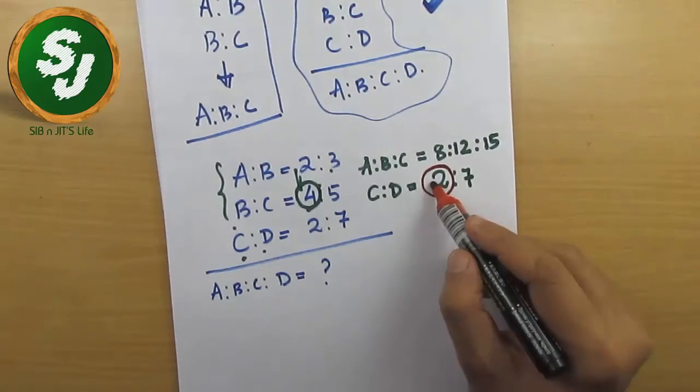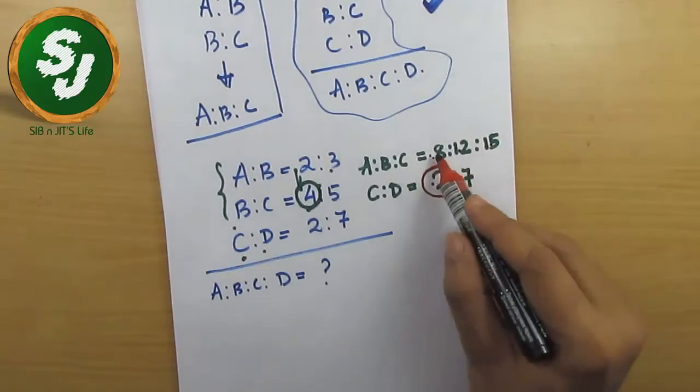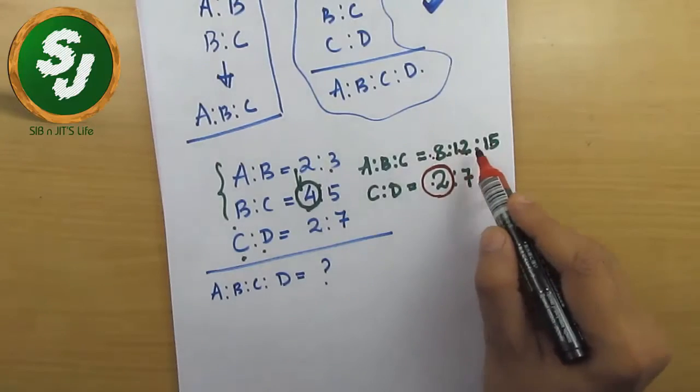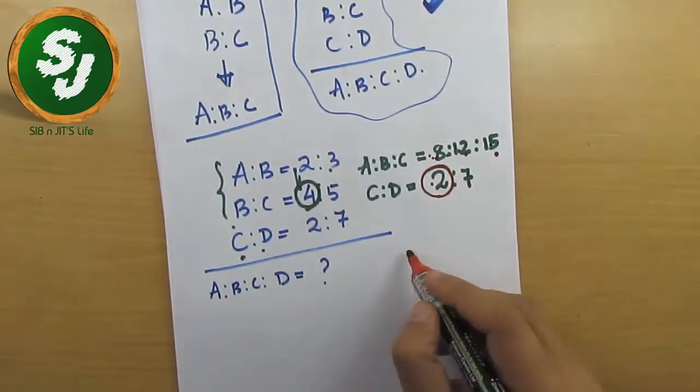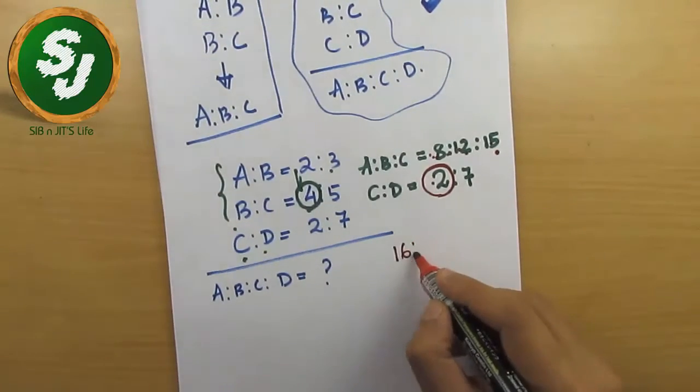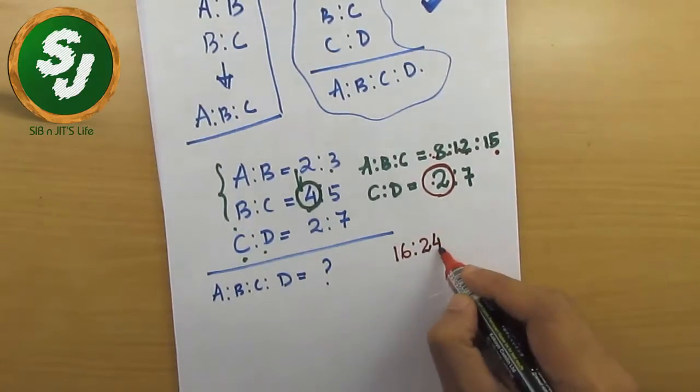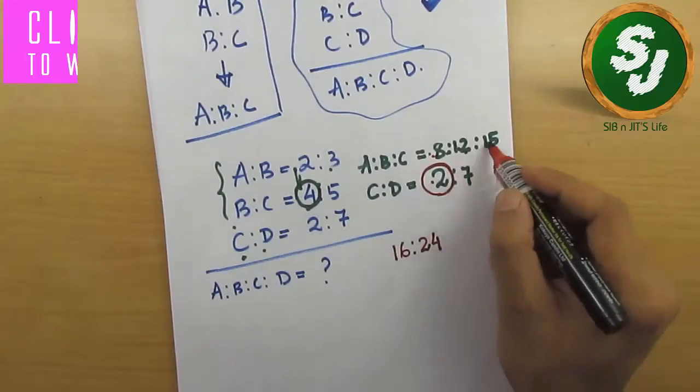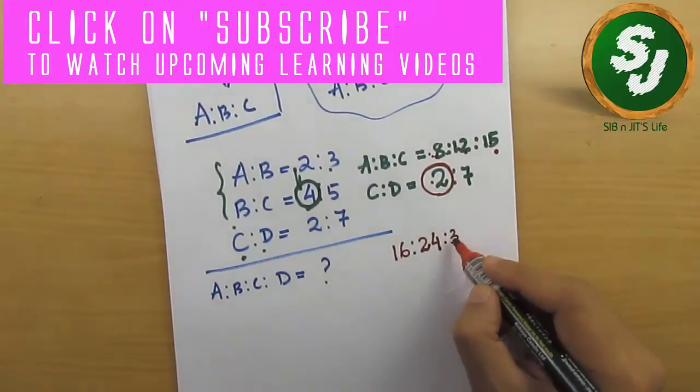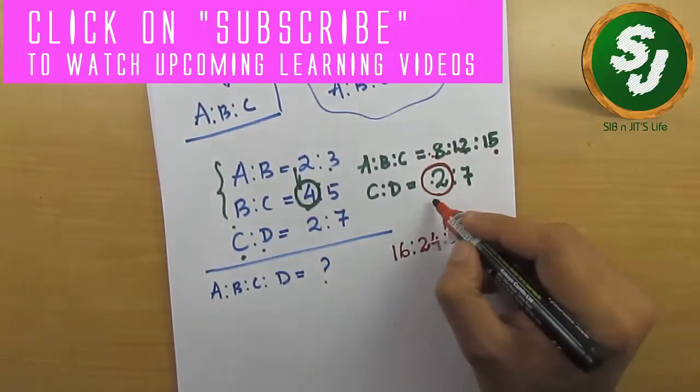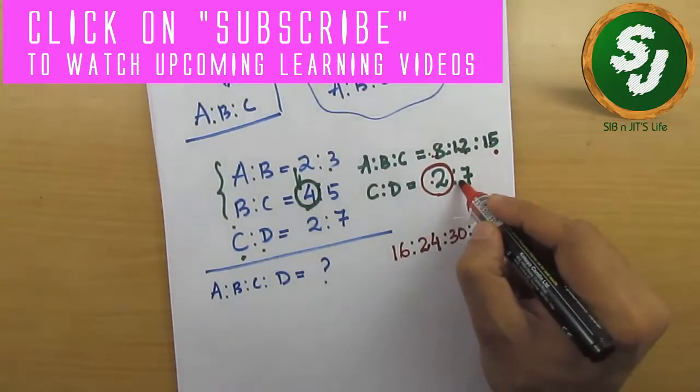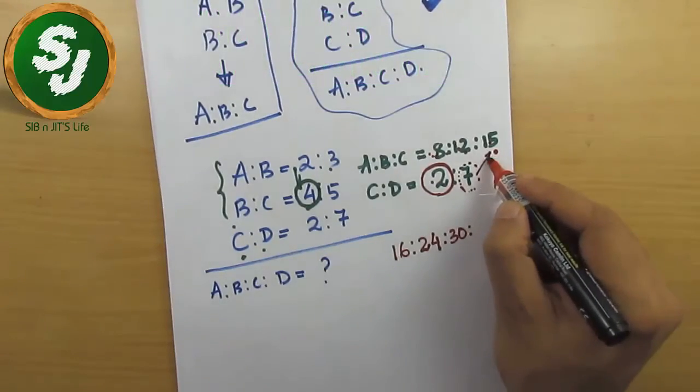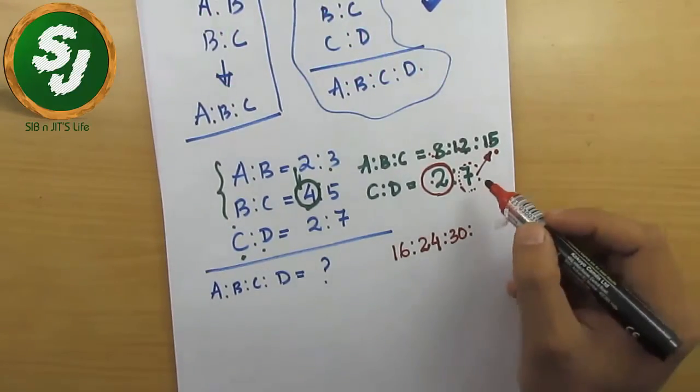So 2 gets multiplied with 8, it becomes 16. 2 gets multiplied with 12, it becomes 24. 2 gets multiplied with 15, it becomes 30. Then after this, 2's work is over.